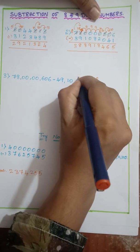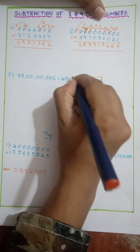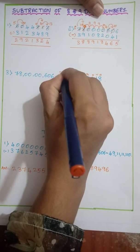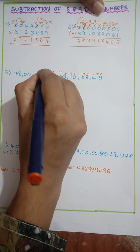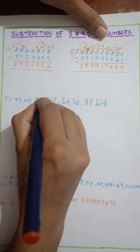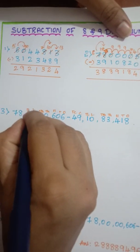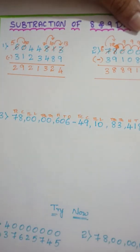Once, tens, hundreds, place values. Let me write. Thousand, ten thousand, lakh, ten lakh, crore, ten crore. Once, tens, hundreds, thousand, ten thousand, lakh, ten lakh, crore, ten crore.